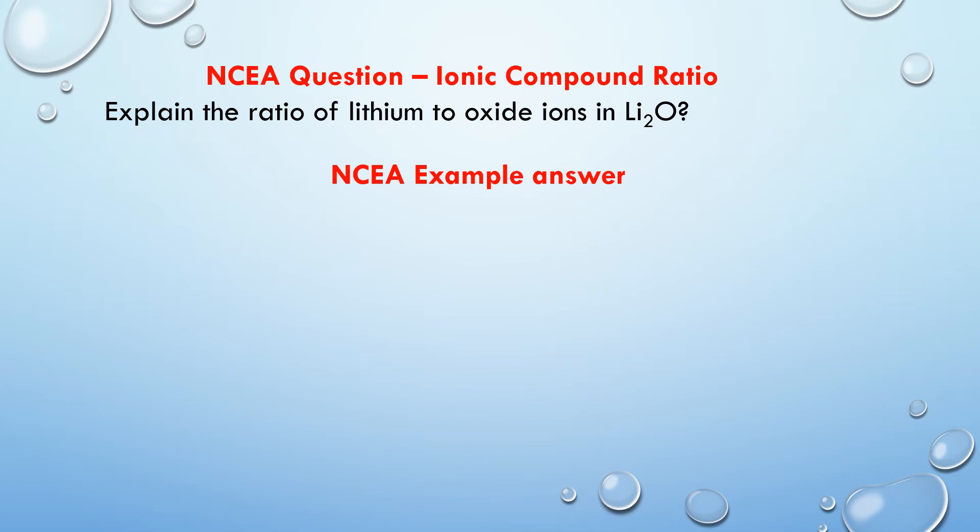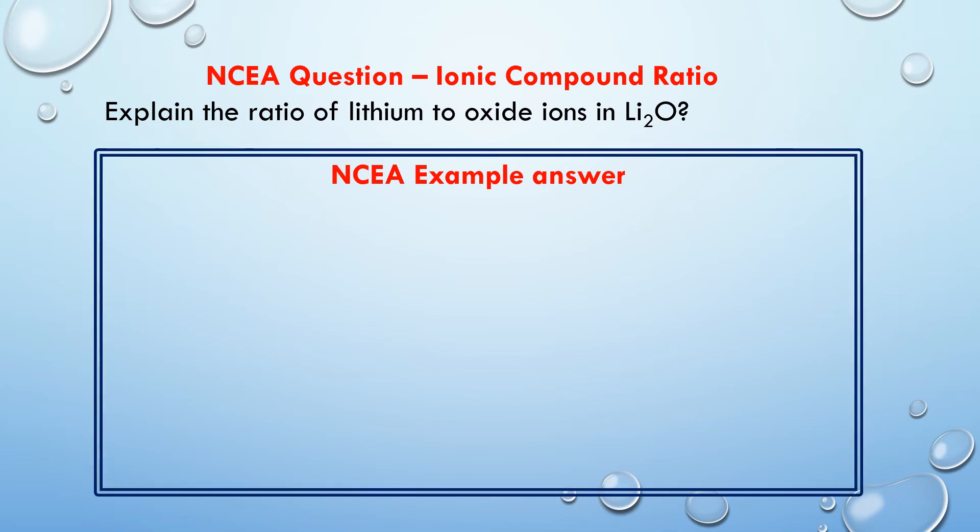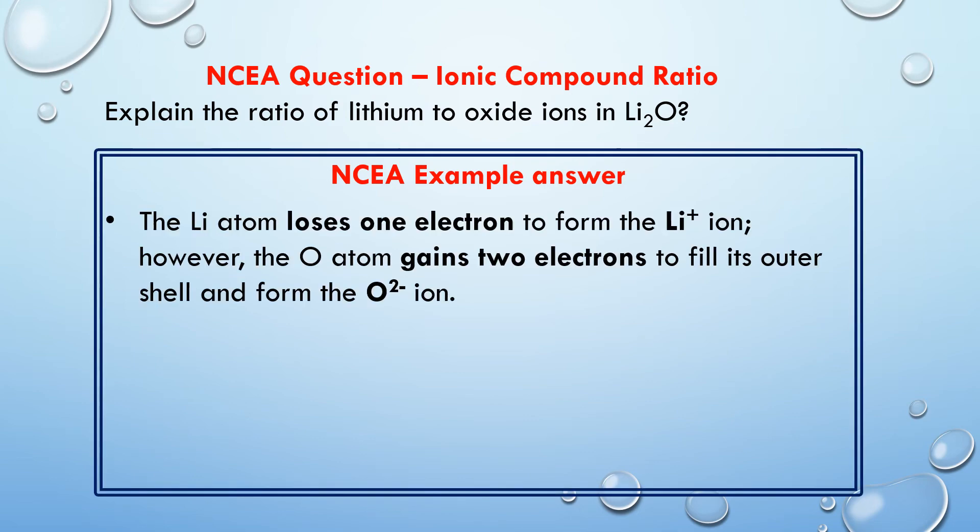So the first thing we're going to do is state how many electrons did lithium lose and what ion is it, and how many electrons did oxide gain and what is the charge of its ion. So that's the first part to the answer. Here I've said that the lithium loses one electron in its outer shell, so it becomes the lithium plus ion.